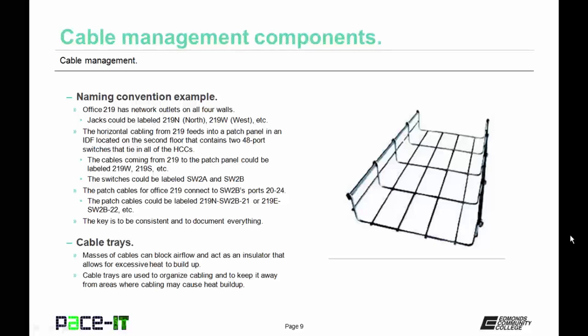For example, suppose office 219 has network outlets on all four walls. The jacks could be labeled 219N, 219W, etc. The horizontal cabling from office 219 feeds into a patch panel in an IDF located on the second floor that contains two 48-port switches tying in all the horizontal cross connects. The cables coming in from office 219 to the patch panel could be labeled 219W, 219S, etc., as they relate to their location in the office.